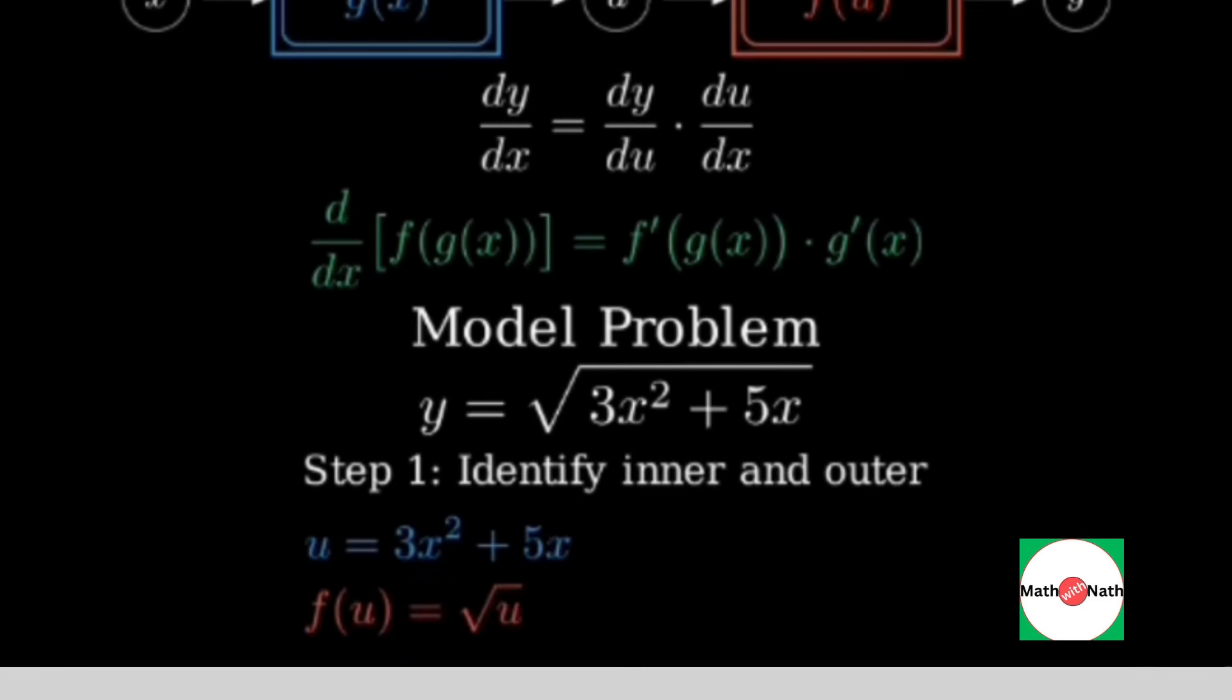Step one, identify the inner and outer functions. Let u equal 3x squared plus 5x. The outer function is f of u equals the square root of u.